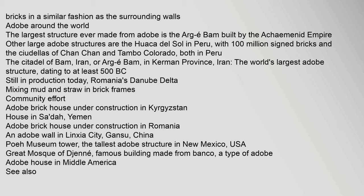The largest structure ever made from adobe is the Arg-e Bam, built by the Achaemenid Empire. Other large adobe structures are the Huaca del Sol in Peru with 100 million signed bricks, and the Ciudadelas of Chan Chan and Tambo Colorado, both in Peru. The Citadel of Bam, Iran, or Arg-e Bam, in Kerman Province, Iran, is the world's largest adobe structure, dating to at least 500 BCE.